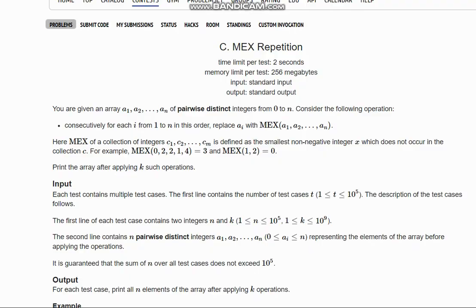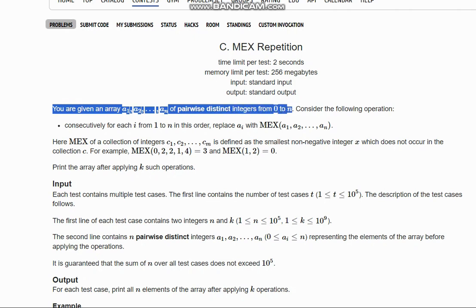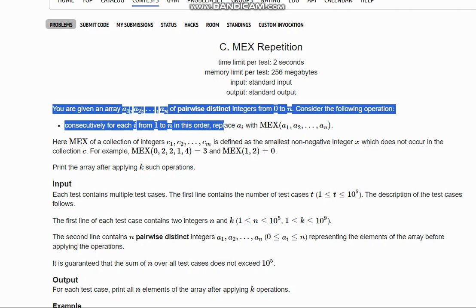Hello everyone, welcome to the channel. Here we are discussing the question MEX Repetition of Penda Round 2 by Codeforces. The question states that you are given an array a1 to an of pairwise distinct integers from 0 to n. Consider the following operation: consecutively for each i from 1 to n in this order, we need to replace ai with MEX of a1 to an.